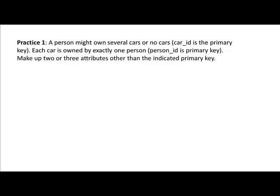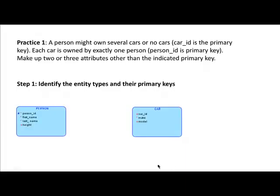You've heard the scenario in textual form, and now you need to systematically translate it into an entity relationship diagram. The first step is to identify the entity types and their primary keys. From this description, the two entity types are person and car. I've made up some attributes: person has person ID as primary key, with first name and last name as required attributes and height as an optional attribute.